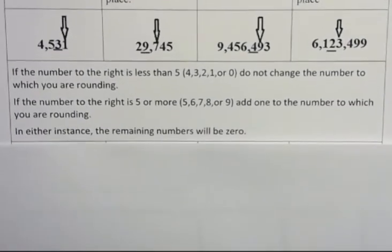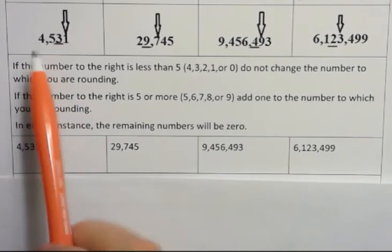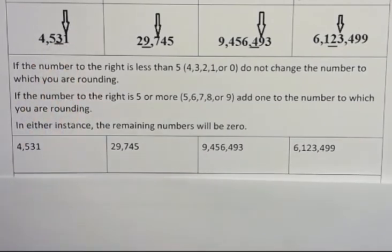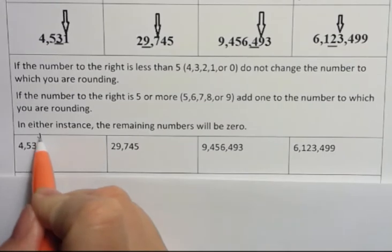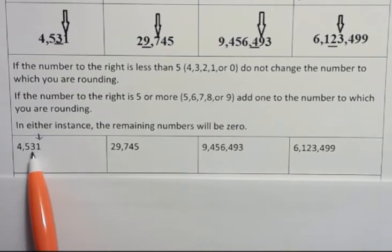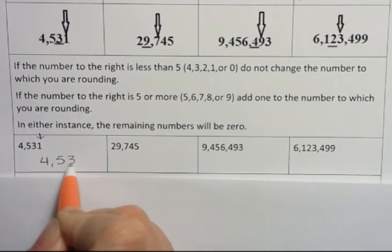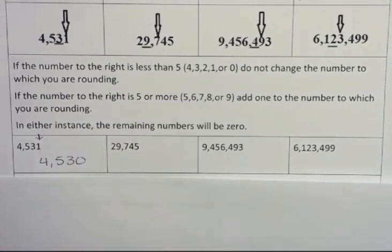Alright, so let's do those problems from up above. If I want to round 4,531 to the tens place, then I am looking at the ones place, and that number is less than 5. So that means I don't change my 10. I would have 4,530. Notice that anything after the number we round to is going to become a 0.